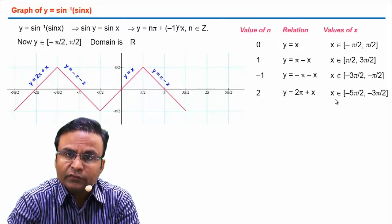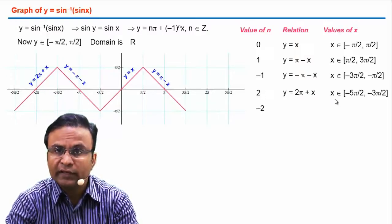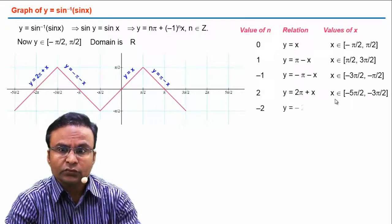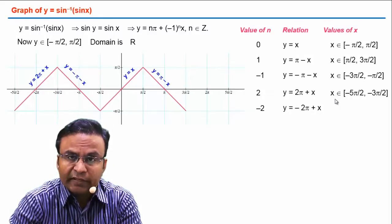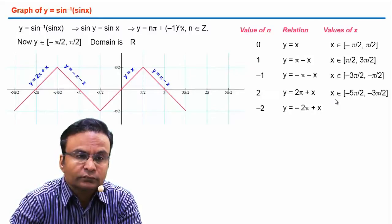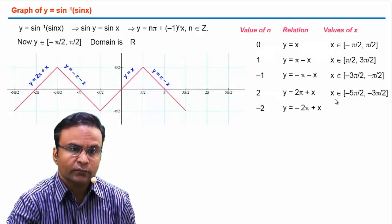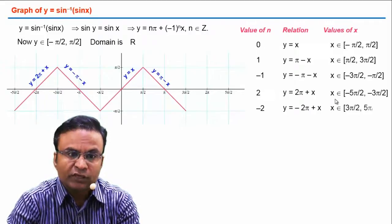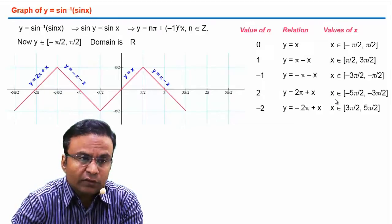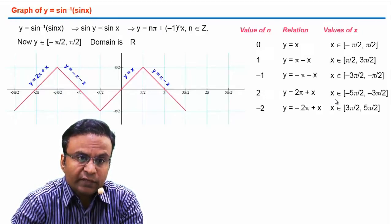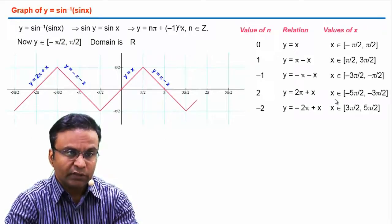Similarly, for n = -2, the relation is y = -2π + x, and the corresponding values of x are x ∈ [3π/2, 5π/2]. We draw the straight line with slope 1 for this section. The graph for this case is added accordingly.